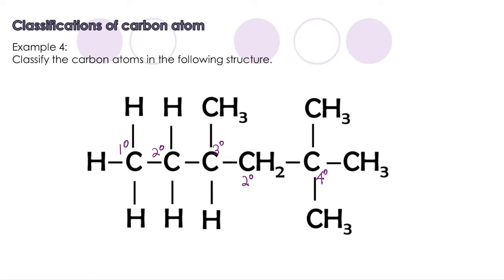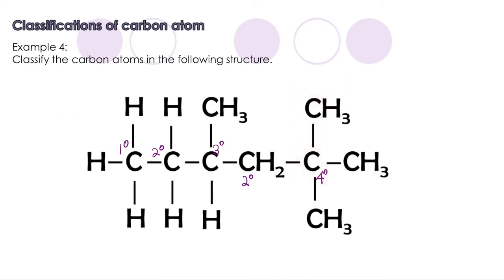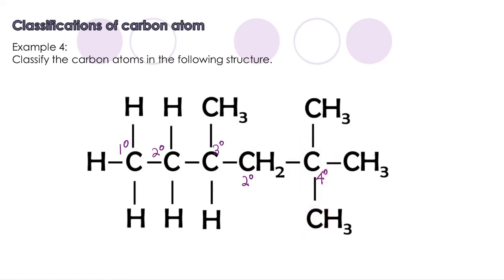This carbon is attached to one carbon, meaning it is a primary carbon. The same applies to this one, this one, and this one as well — all of those carbons are primary carbons. This is how we classify the carbon atoms.